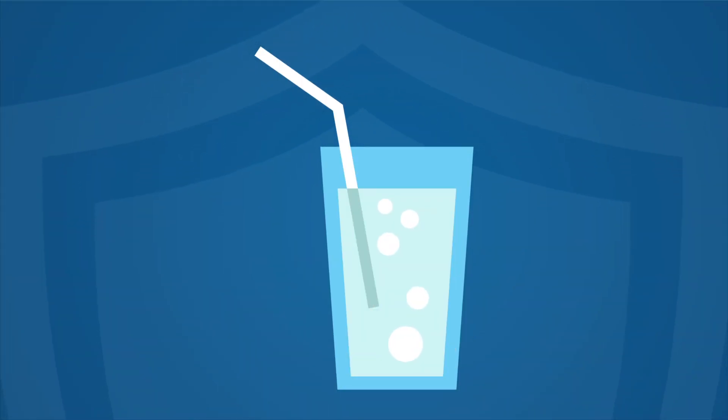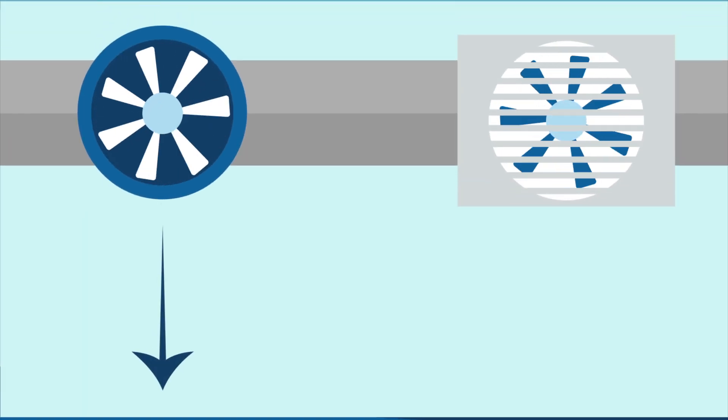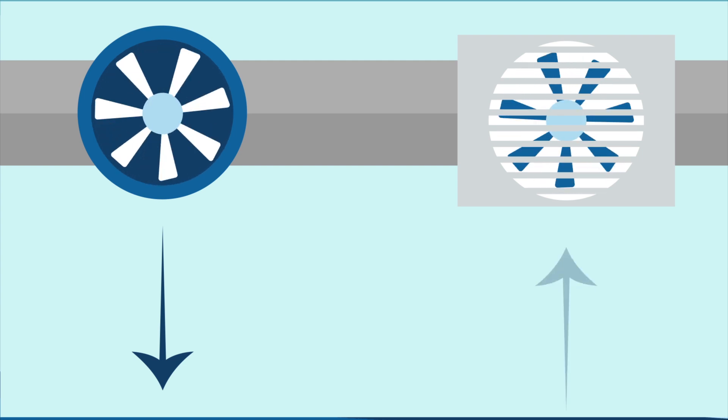Negative pressure spaces are essential to infection control. Think of negative pressure like a straw in a glass of water. To draw the water out, you suck on the straw. Air within a negative pressure room works the same way. We use supply fans to blow air into a room and exhaust fans to suck the air out of a room.